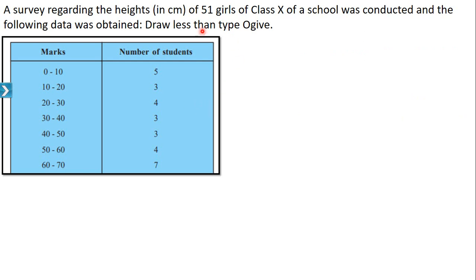Now draw a less than type Ogive for this frequency distribution table. Observe this table. What is the difference between the previous table and this one? Here, class intervals are given and the numbers in the next column are frequencies — not cumulative frequencies. When class intervals are given, numbers in the next column are frequencies. We have to convert this table into a less than type cumulative frequency distribution table to draw a less than type Ogive.